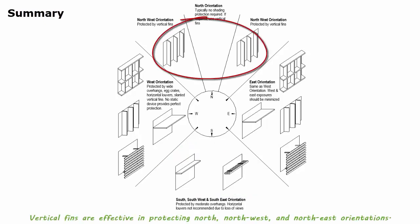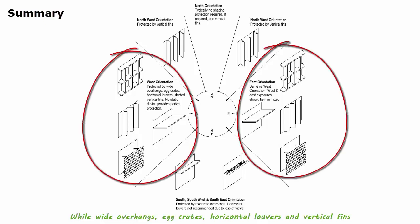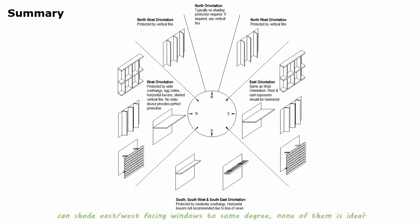Vertical fins are effective in protecting north, northwest, northeast orientations. While wide overhangs, egg crates, horizontal louvers, and vertical fins can shade east-west-facing windows to some degree, none of them is ideal.